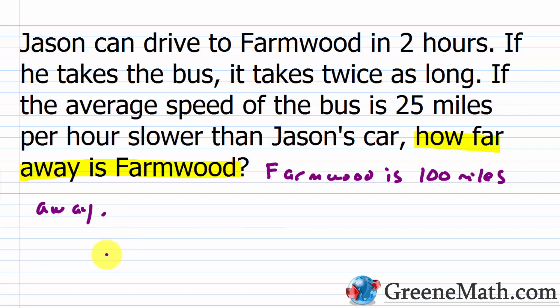You can check: if Jason drives at 50 miles per hour for two hours, that's 100 miles. The bus is 25 miles per hour slower than the car, so 50 minus 25 is 25 miles per hour. It takes four hours by bus: 25 times 4 is also 100 miles. Either way he's going 100 miles, so Farmwood is 100 miles away.